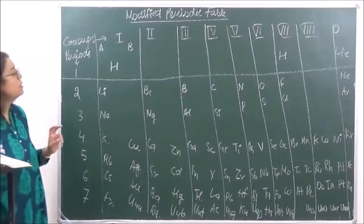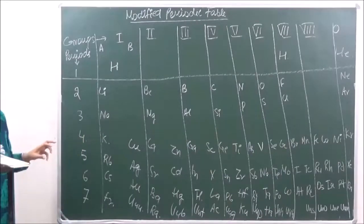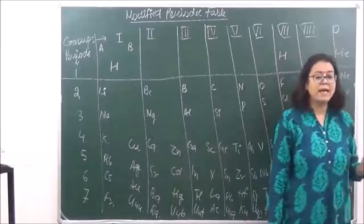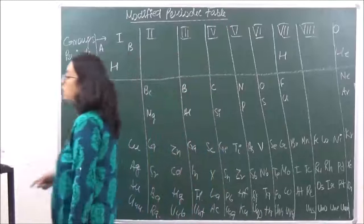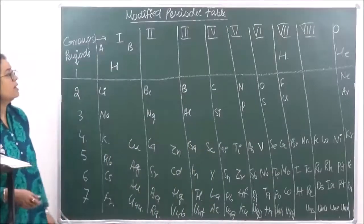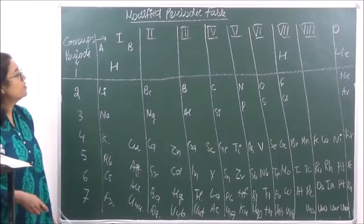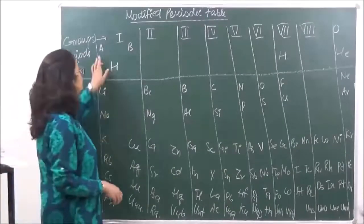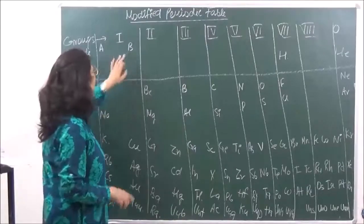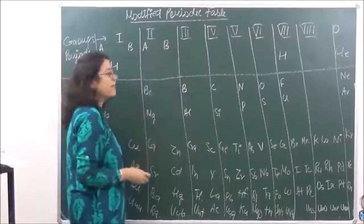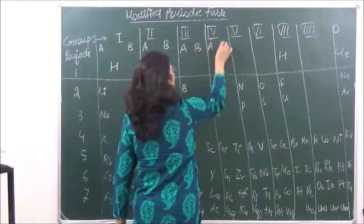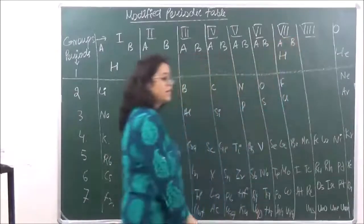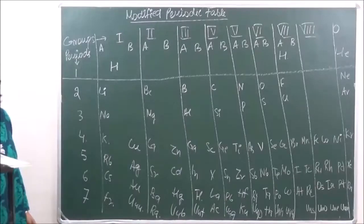The modern periodic table consists of 9 vertical columns known as groups, starting from group 1 to group 0 — that is, groups 1 through 8 and then group 0. Groups 1 to 7 are each divided into subgroups A and B. Group 1 has subgroup A and B, group 2 has subgroup A and B, and so on through group 7. These subgroups A and B are known as the subgroups.